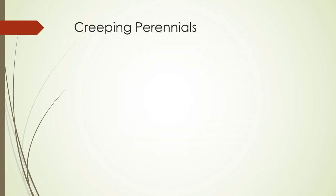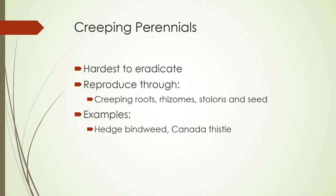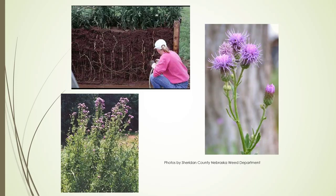Creeping perennials are the hardest to eradicate. They reproduce through creeping roots, rhizomes, stolons, and seed. Canada thistle is a prime example, as is hedge bindweed. They continually grow year after year with incredible root systems underneath, and sometimes you think you've got a new sprout when it's actually just part of the same plant. Here's a side view of Canada thistle showing the extensive root system.